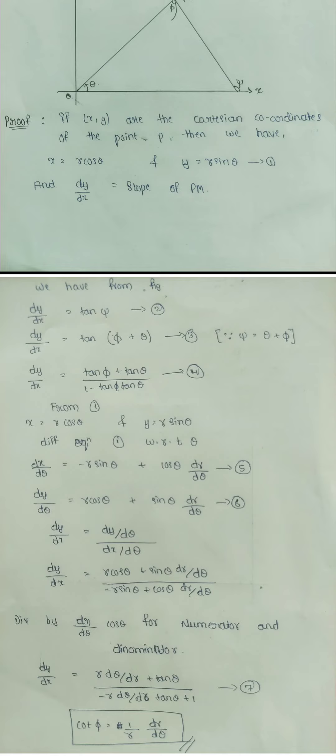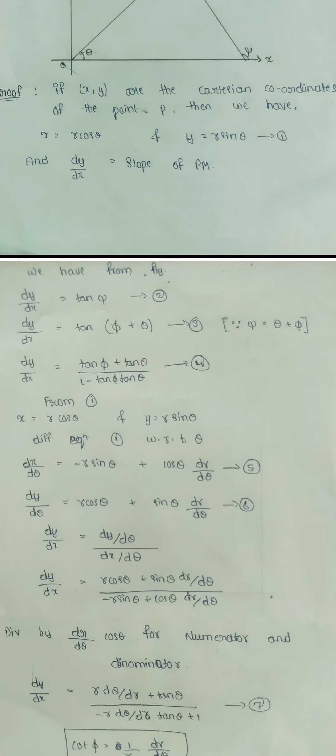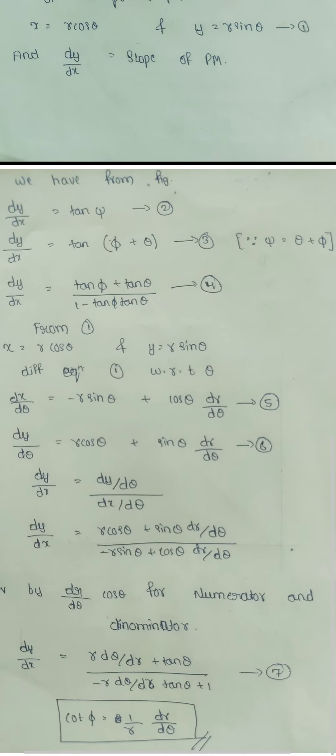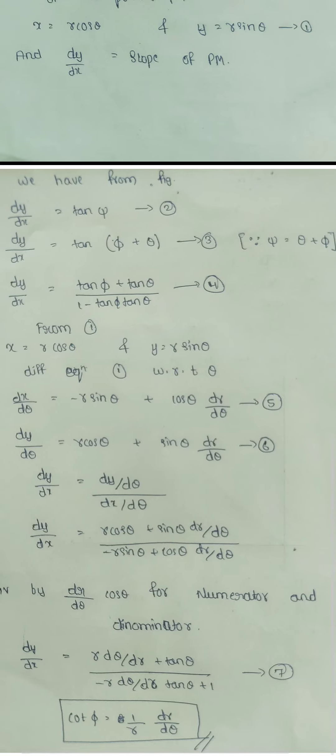From equation 1, we have x equals r cos theta and y equals r sin theta. Differentiating equation 1 with respect to theta: dx by d theta equals minus r sin theta plus cos theta times dr by d theta. Take it as equation 5.